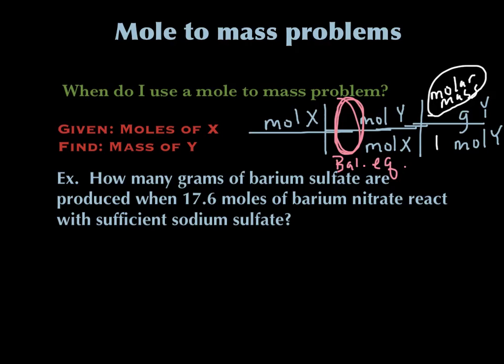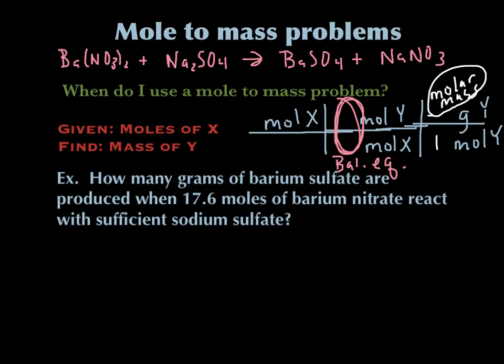Let's take a look at this problem. It says: how many grams of barium sulfate are produced when 17.6 moles of barium nitrate react with sufficient sodium sulfate? So we're given moles of something — barium nitrate — and we're asked to find grams of something else. This is a mole to mass problem. The first thing you need to do is start with a balanced chemical equation, so pause and write the balanced chemical equation. I've written the equation right up here on the top, and now we're going to go ahead and balance it.